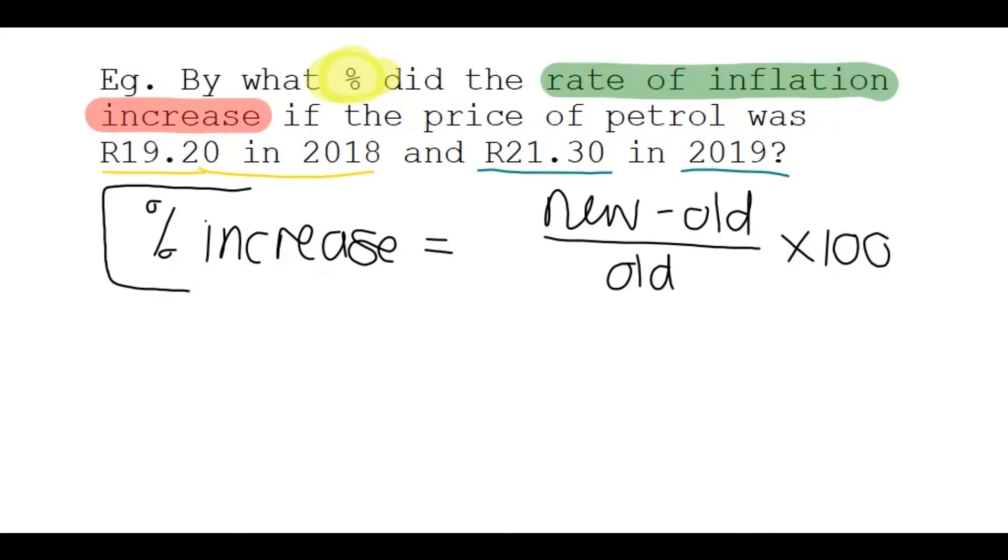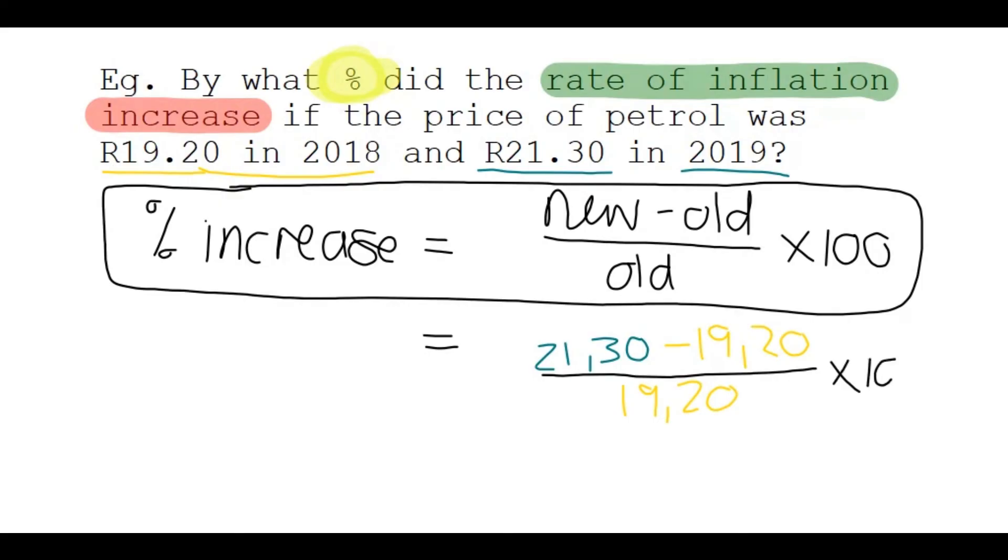This works for any type of question with percentage increase, not just inflation. So the new price, that's that blue one, that's R21.30 minus the old one, that's the yellow one, R19.20, divided by that same old one, R19.20. And whenever they ask you for a percentage you know you're going to have to multiply your answer by 100 because that gives your percentage.